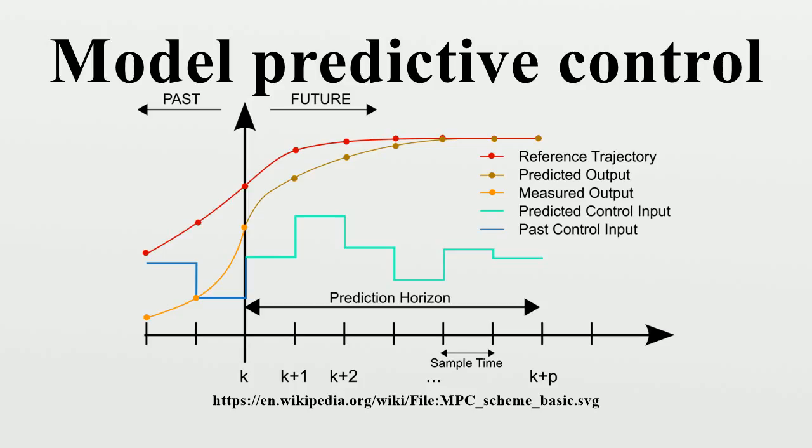Model predictive controllers rely on dynamic models of the process, most often linear empirical models obtained by system identification. The main advantage of MPC is the fact that it allows the current time slot to be optimized while keeping future time slots in account.